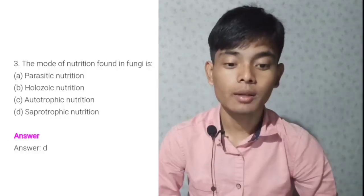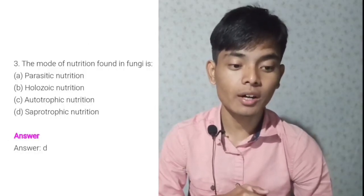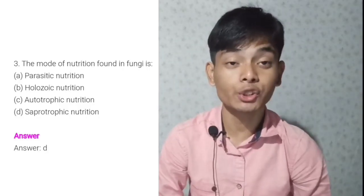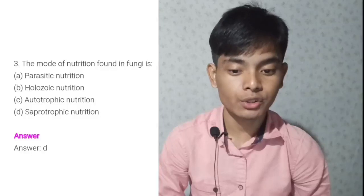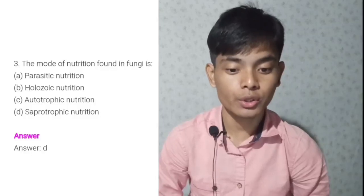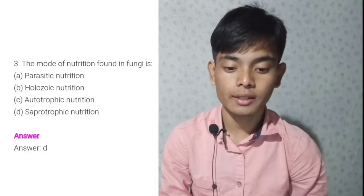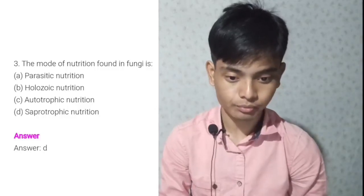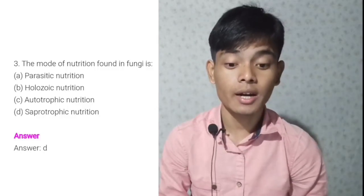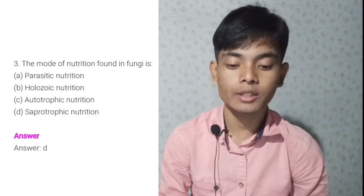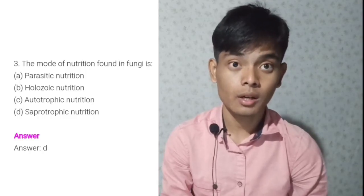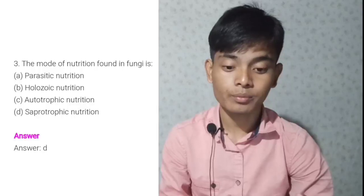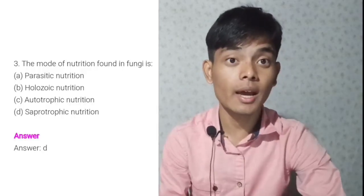Question number three: The mode of nutrition found in fungi is? A — parasitic nutrition. B — holozoic nutrition. C — autotrophic nutrition. D — saprophytic nutrition. Answer is D — saprophytic nutrition. They are saprophytes; they absorb nutrition from dead organic matter.